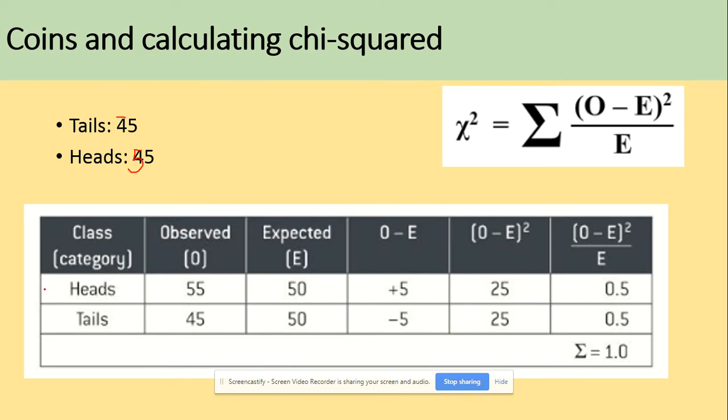So as we can see, we've put this data into categories as the assumptions state. We need categories and we're using this equation to work out for each of the categories. So to work out our chi-squared value, it's the sum of those answers. So this is our chi-squared equals 1. What do we do then with this chi-squared?